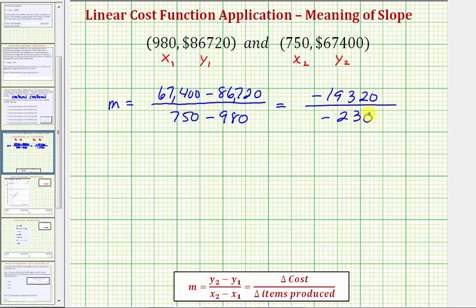Now simplifying this quotient, -19,320 ÷ -230 = 84. The slope equals 84.